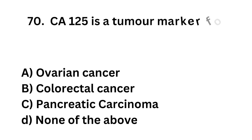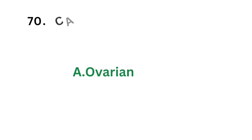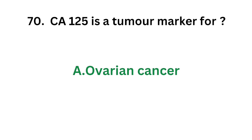Question number 70. CA-125 is a tumor marker for: Option A - Ovarian cancer; Option B - Colorectal cancer; Option C - Pancreatic carcinoma; Option D - None of the above. The correct answer is Option A, Ovarian cancer. CA-125 is a tumor marker for ovarian cancer.